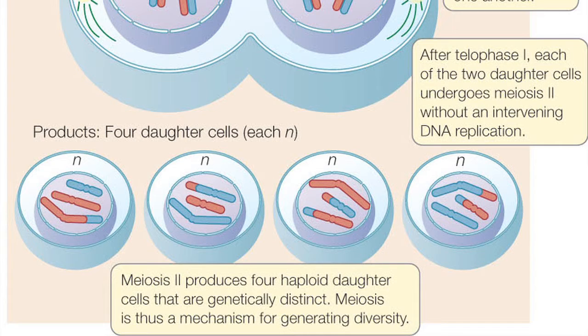Meiosis II produces four haploid daughter cells that are genetically distinct. Meiosis is thus a mechanism for generating diversity.